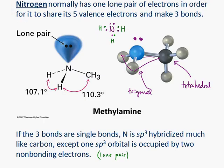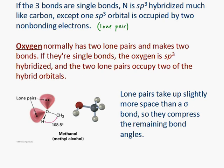So something similar can happen to oxygen. We saw oxygen's hybrid orbitals in formaldehyde before. Here's an oxygen that's making single bonds, which means it's sp3 hybridized again.